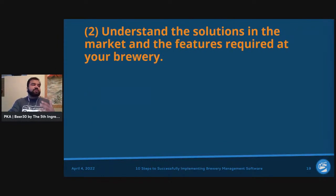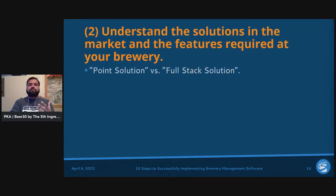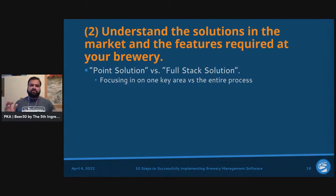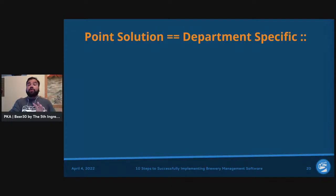Step number two: understand the solutions in the market and the features required at your brewery. You want to analyze what's out there — point solutions versus full stack solutions. Point solutions are focused on one key area, while full stack solutions focus on the entire process. Start figuring out what the problems are, then look at department-specific point solutions.